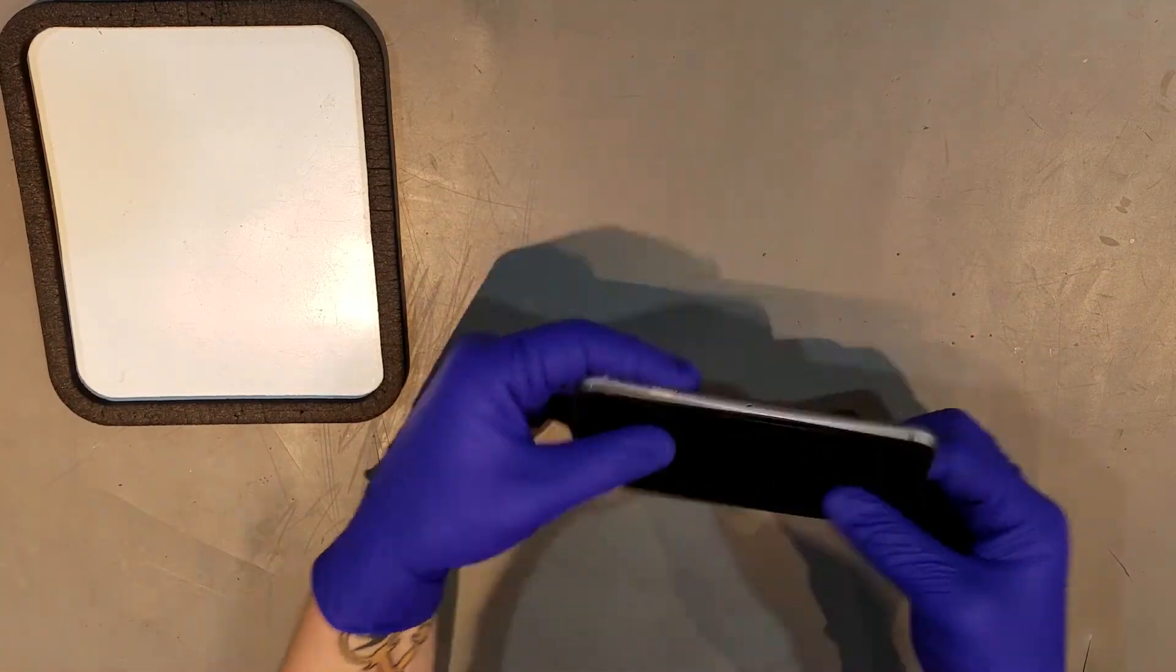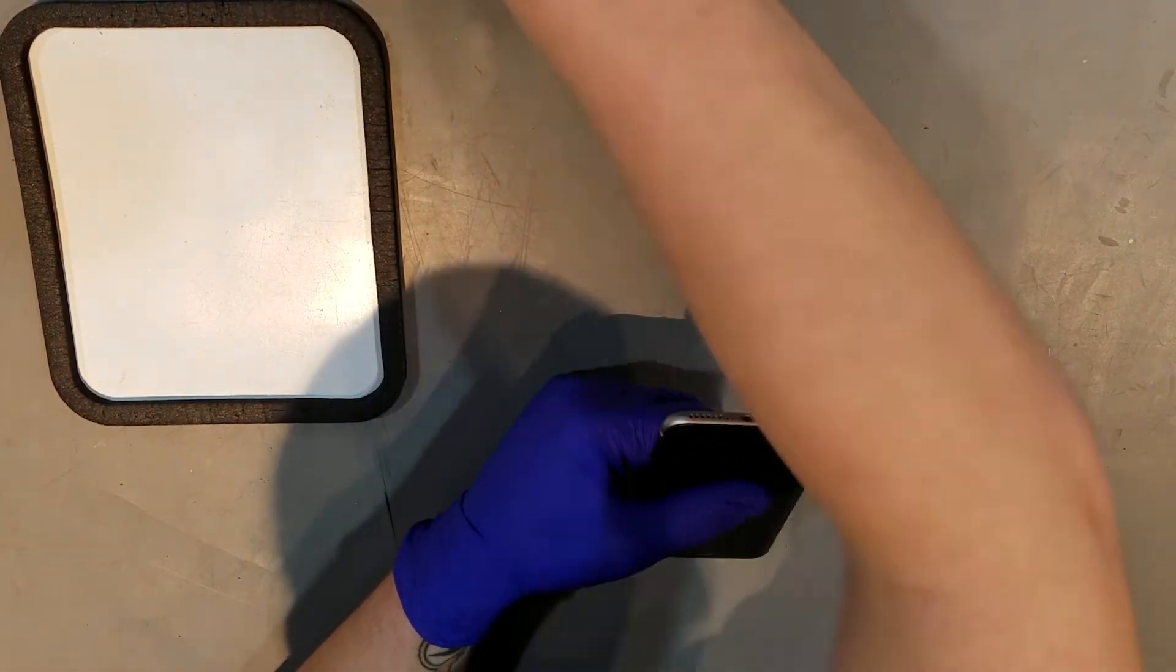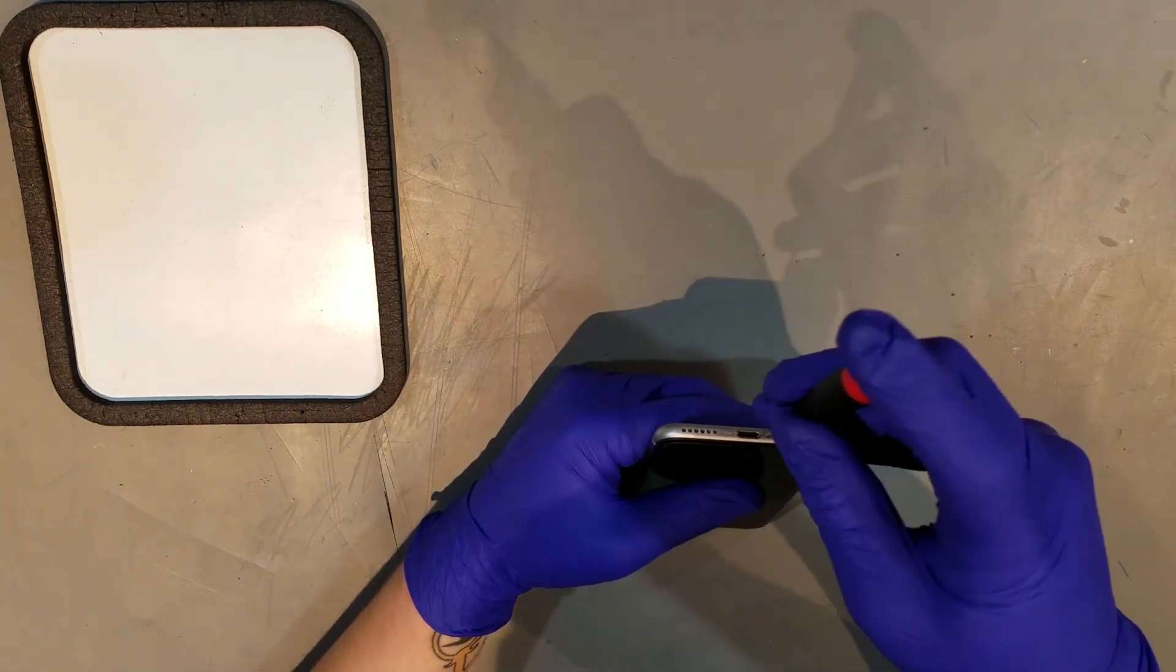After the iPhone has been powered down, you'll need to remove the bottom two pentalobe screws that are located near the charge port. These screws anchor the bottom of the display to the phone.